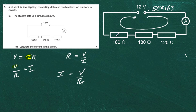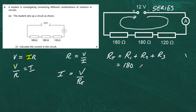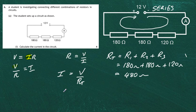We can see it's a series circuit, so all we have to do is add up all the resistors. The total resistance RT equals R1 plus R2 plus R3. So we have 180 ohms plus 180 ohms plus 120 ohms, giving us a total of 480 ohms. The current in the circuit is therefore equal to the supply voltage of 12 volts divided by the total resistance of 480 ohms.